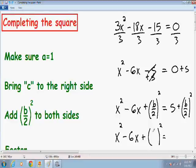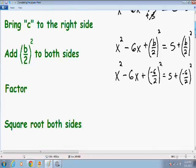So instead of writing b over 2, I'm going to put negative 6 over 2. And the same on the right hand side. Instead of b over 2 I'm going to put negative 6 over 2. Now let's simplify this even further.